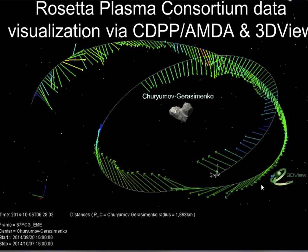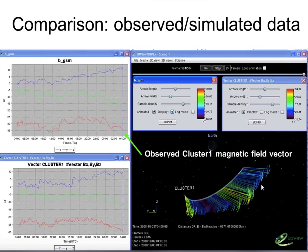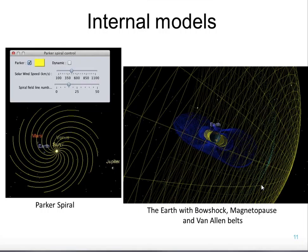Coming closer to our aim, here are magnetic field measurements by the Rosetta spacecraft along the Rosetta trajectory around the 67P comet. The aim of all this is to compare observation and simulation in different contexts. And all that we need to come closer to the surface is a magnetic field model.